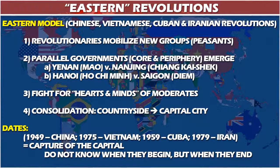The dates 1949 for China, 1975 for Vietnam, 1959 for Cuba, 1979 for Iran — these are not when these revolutions started but when they ended: when the revolutionaries took control of the capital city and ousted the pre-existing government. We don't know when Eastern revolutions begin — they might start as peasant rebellions or someone burning a landlord's property deeds. What we do know is when they end: when they successfully become the new legitimate government of their country.